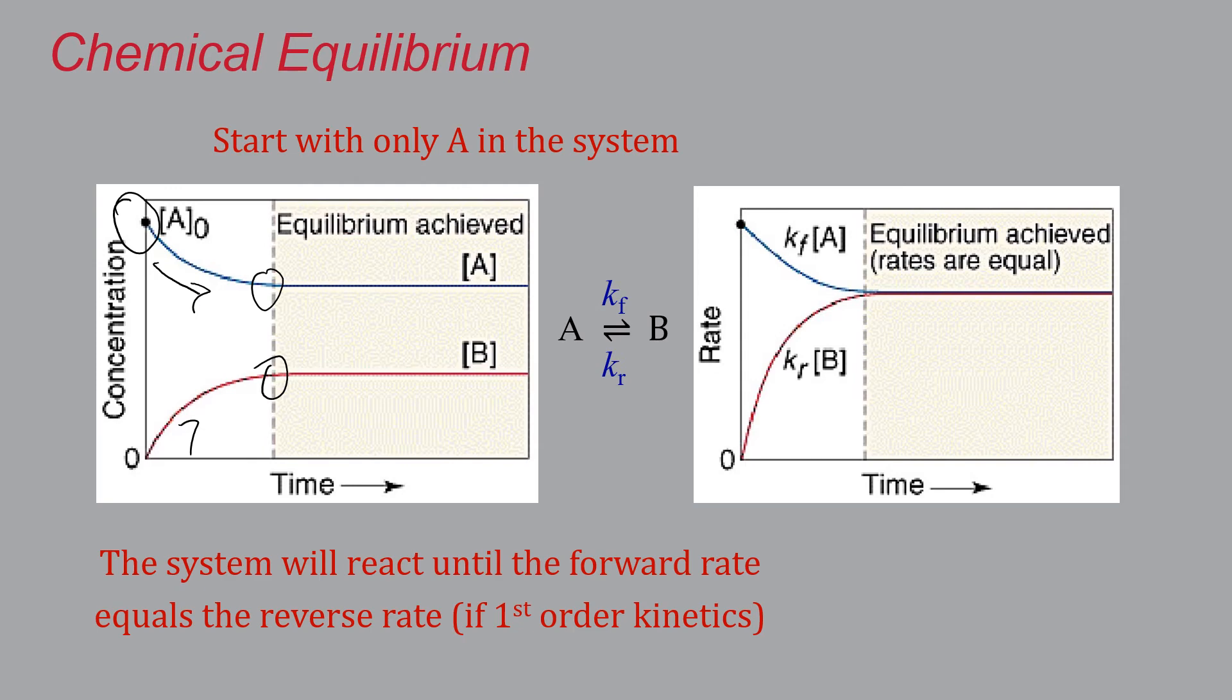What would that be math-wise? Well, if we assume first-order kinetics, we can say that the rate of the forward reaction is just going to be kf times the concentration of A, and the rate of the reverse reaction is just going to be kr times the concentration of B. In math speak, you're going to say kf times the equilibrium concentration of A equals kr times the equilibrium concentration of B, whatever those might happen to be.